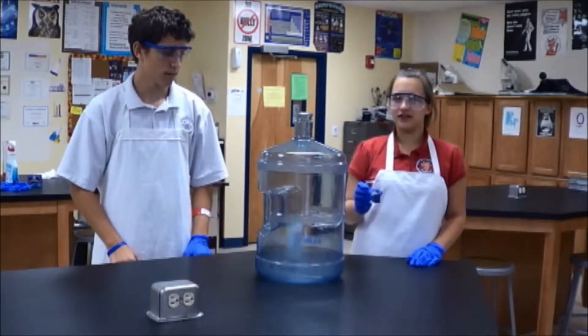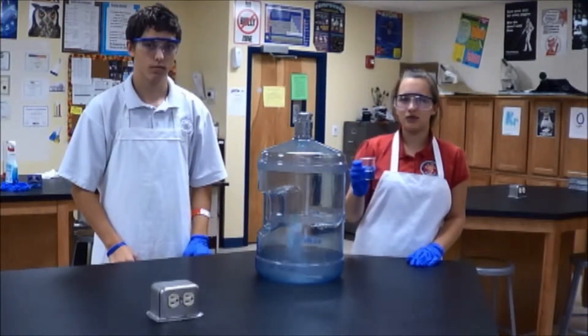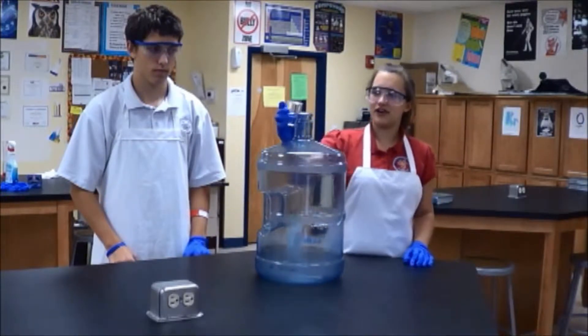We're going to take 25 milliliters of 100% isopropyl alcohol and put it in a 5 gallon plastic jug.